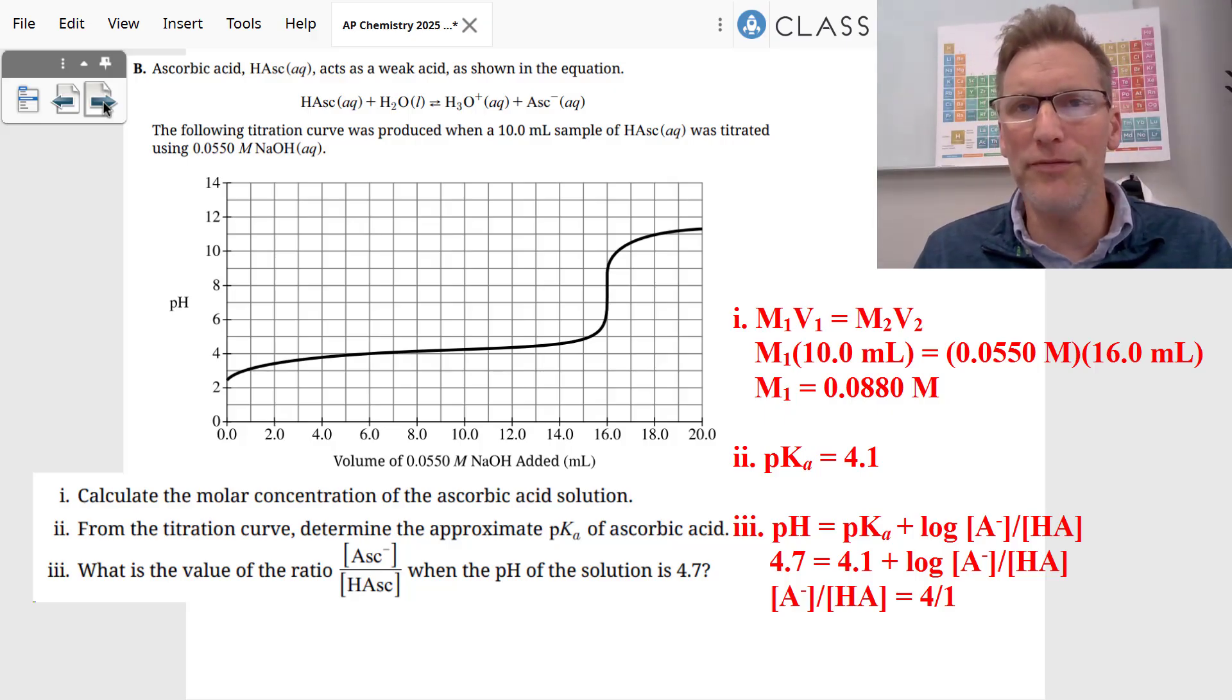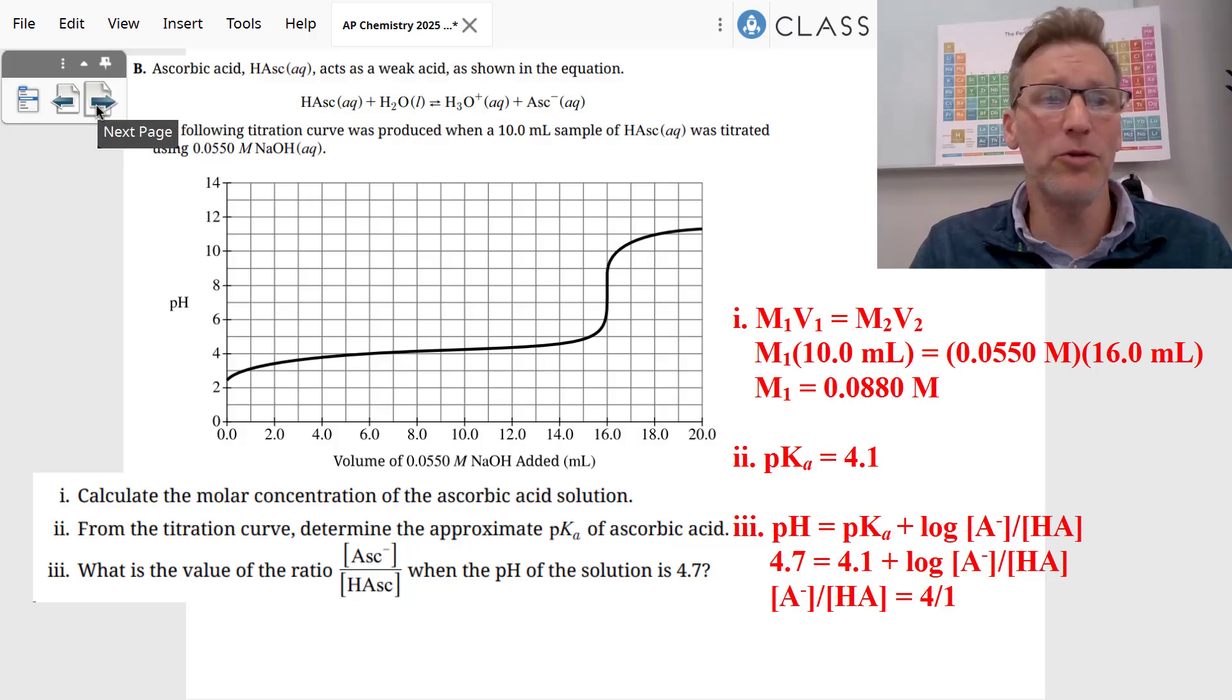I'm sure they're going to give you some sort of leeway on that problem. If you found the pKa was 4.2 or 4.1 or something like that, if you do 4.1, it's a kind of nice ratio. I got 3.98 on my calculator, so I just rounded out the 4 to 1 ratio there.